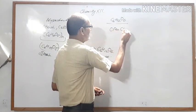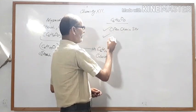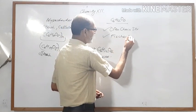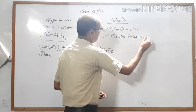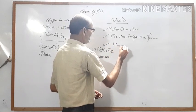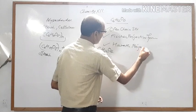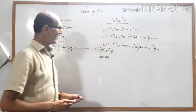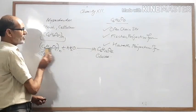The three types of glucose structures are: number one, open chain structure; number two, Fischer projection formula; and number three, Haworth projection formula.